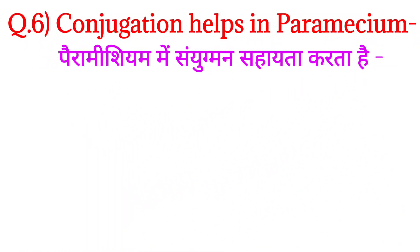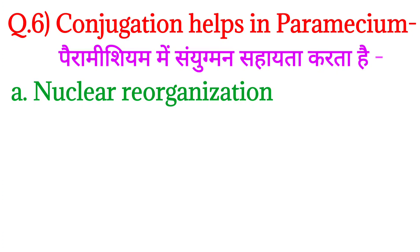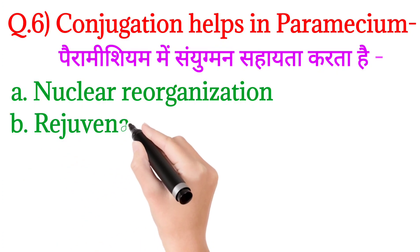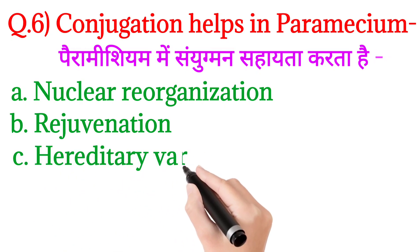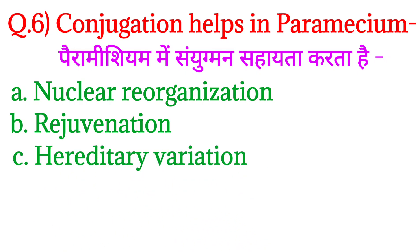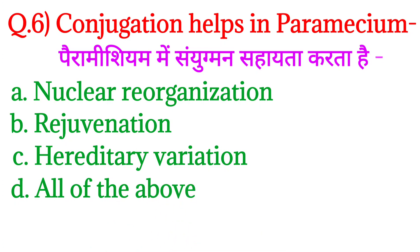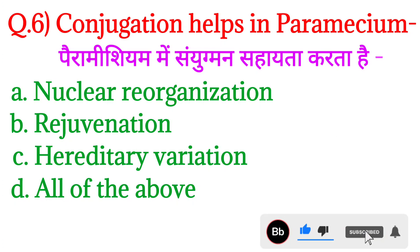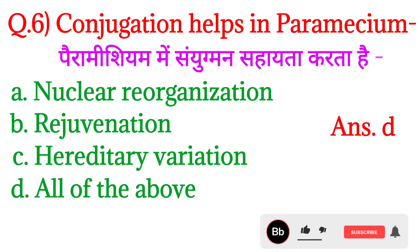Next question number 6 — conjugation helps in Paramecium — Paramecium mein sanyugman sahayata karta hai. Option A: nuclear reorganization, option B: rejuvenation, option C: hereditary variation, and option D: all of the above. Chalo iska answer hoga option number D: all of the above.